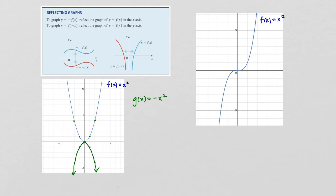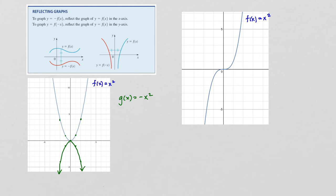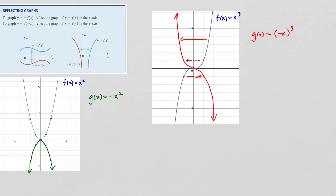To illustrate a reflection across the y-axis, let's consider a different function: f(x) = x³. If I wanted to look at g(x) = (-x)³, this would reflect the graph across the y-axis. The point at (0, 0) stays where it is, but the point at (1, 1) would reflect across to (-1, 1). All those points would reflect across to a mirror image, so that graph would look like this. Likewise, the points down here would reflect across to the other side. This is what the graph of (-x)³ would look like.